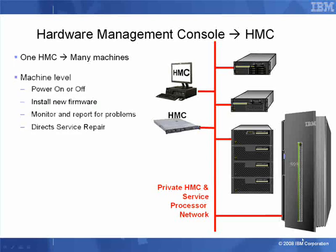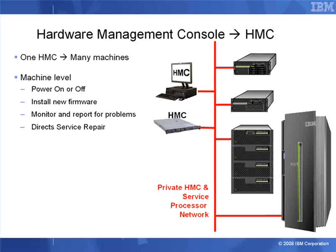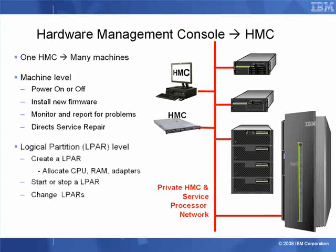The HMC is used for machine level functions like powering on and off the Power 6 based machines. It can be used to update the firmware inside the machine. It monitors and reports problems on the main machines — in fact it is the HMC that will dial back to IBM and inform IBM of any problems so we can action an engineer to bring a replacement part as soon as possible. When the CE arrives they will also use the HMC to direct the service repair, get instructions from it, and switch the machine into particular modes of operation so that they can withdraw hardware. Once the Power 6 machine is up we can control our logical partitions: creating them, allocating resources to them, starting and stopping logical partitions and dynamically changing them while the operating systems are actually running.